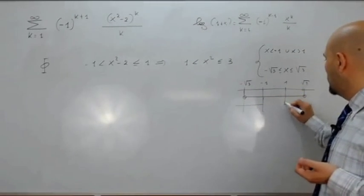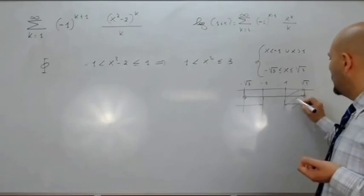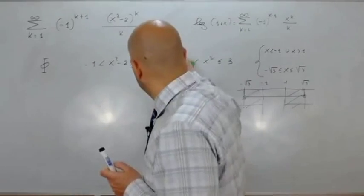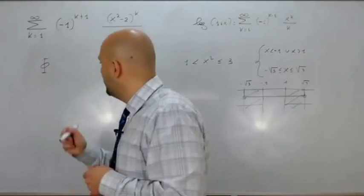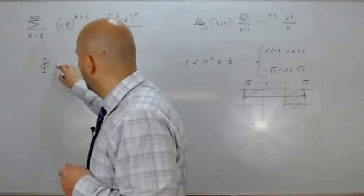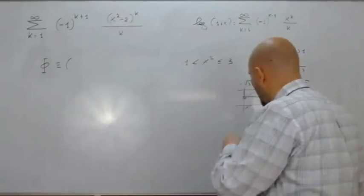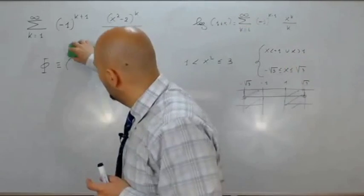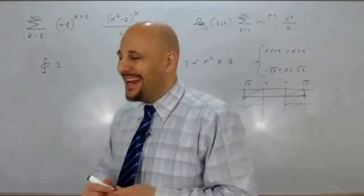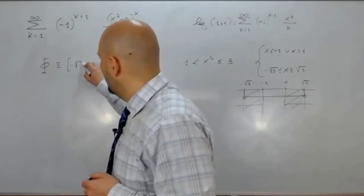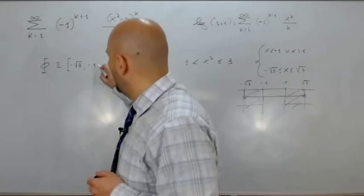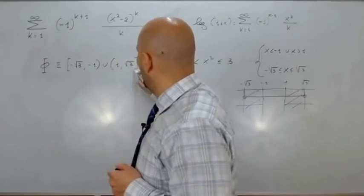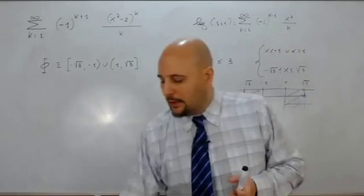Il sistema è verificato in due intervalli. L'insieme di convergenza puntuale vale: fra meno radice di 3 e meno 1, con meno radice di 3 incluso e meno 1 escluso, unione 1 e radice di 3, con 1 escluso e radice di 3 incluso.